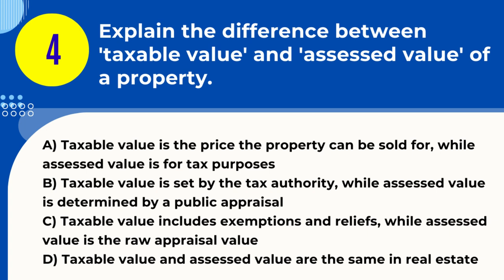Question 4. Explain the difference between taxable value and assessed value of a property. A. Taxable value is the price the property can be sold for, while assessed value is for tax purposes. B. Taxable value is set by the tax authority, while assessed value is determined by a public appraisal. C. Taxable value includes exemptions and reliefs, while assessed value is the raw appraisal value. D. Taxable value and assessed value are the same in real estate. Answer: C.